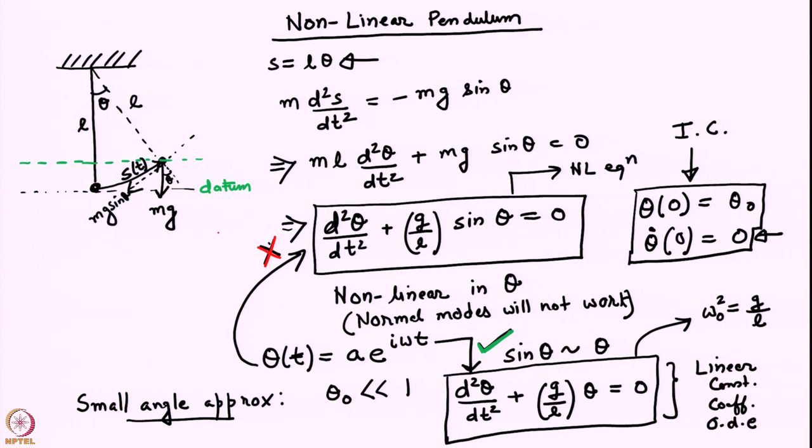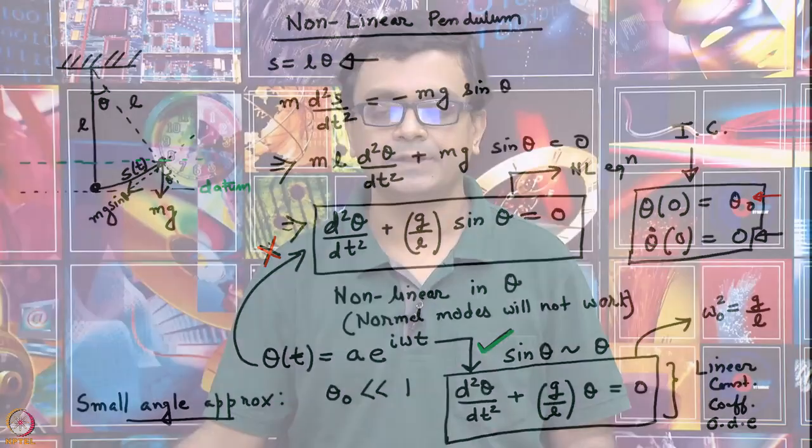This approximation is expected to be valid when the initial displacement θ₀ is small. When θ₀ is sufficiently small, you can expand sinθ and replace it by the first term in the Taylor approximation, which is just θ. The resultant equation then becomes a linear equation in θ, which is amenable to normal mode analysis.